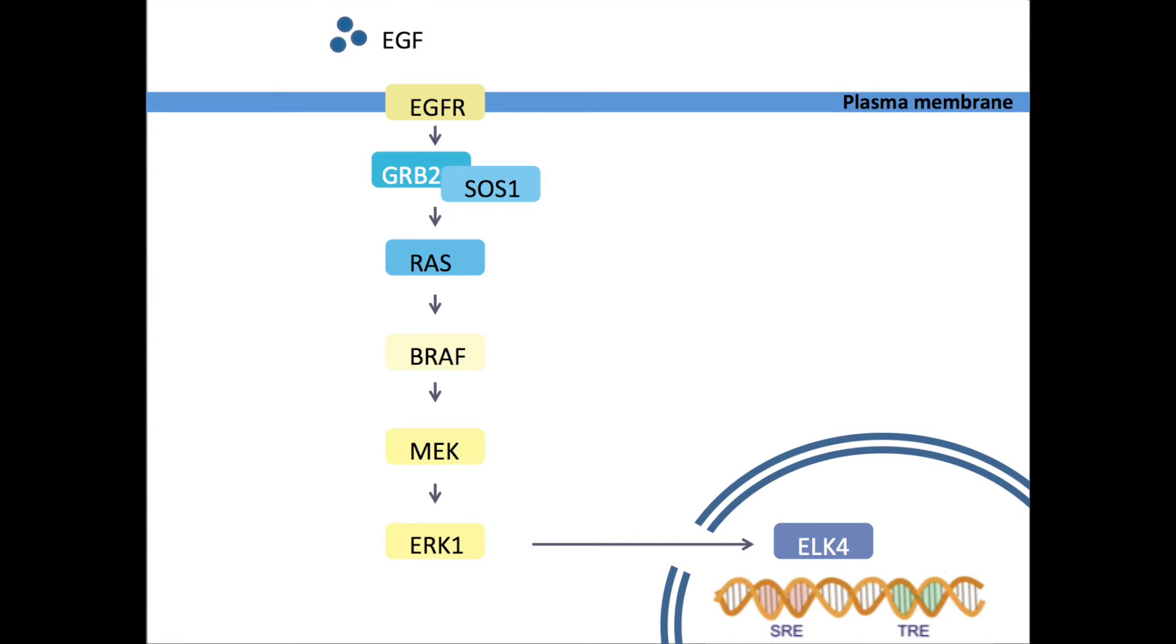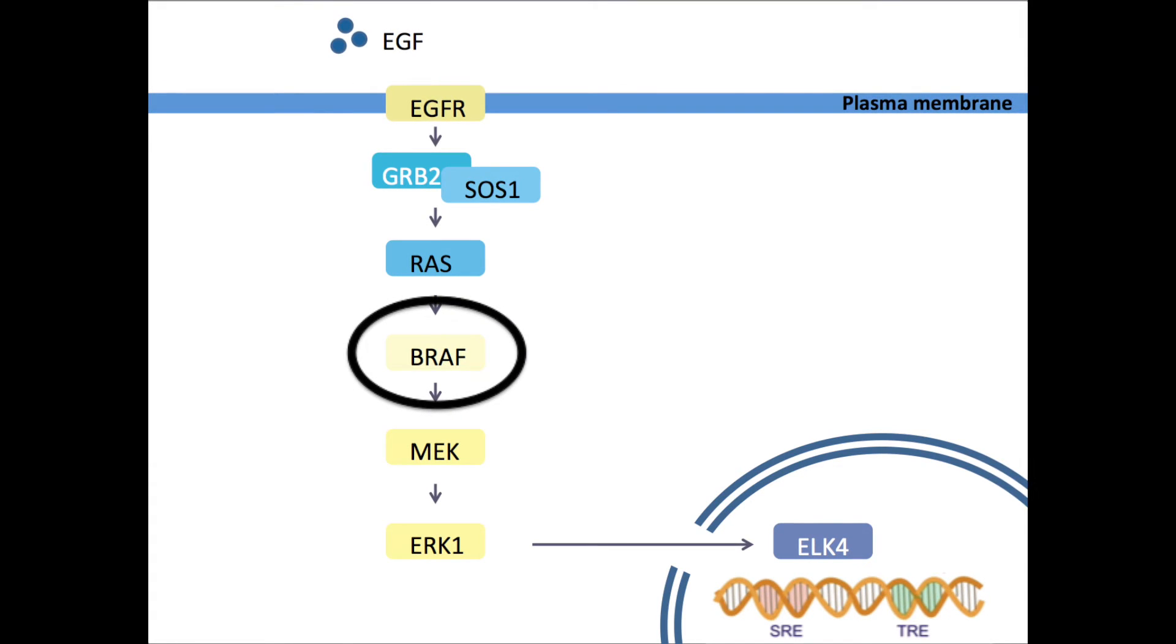This pathway can be dysfunctional in melanoma. Several proteins can be mutated. BRAF is most often mutated in melanomas, in 60% of the cases. Therefore, we will now focus on BRAF, the wild type as well as a mutated type.